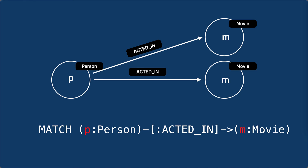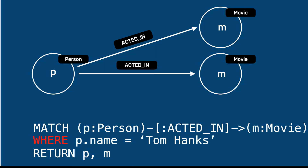The RETURN clause returns the values retrieved from the graph. In this case, we return a person node and two movie nodes.